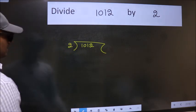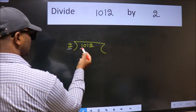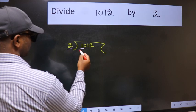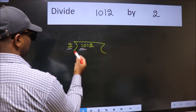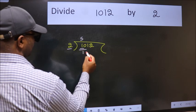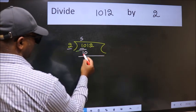Next. Here we have 1 and here 2. 1 is smaller than 2. So we should take 2 numbers, 10. When do we get 10 in 2 table? 2, 5 is 10. Now we should subtract. We get 0.